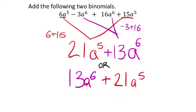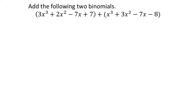A word of caution: some students see a's and want to combine terms even when the exponents are different. Don't combine 21a⁵ and 13a⁶ into 34a¹¹ — that changes the operation completely. Now for a bigger addition problem: since it's addition, just drop the parentheses. We have four different types of terms: x³, x², x, and a constant.